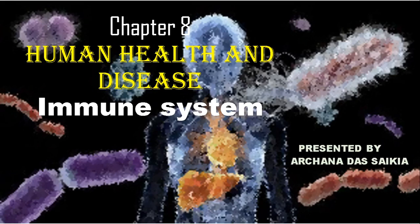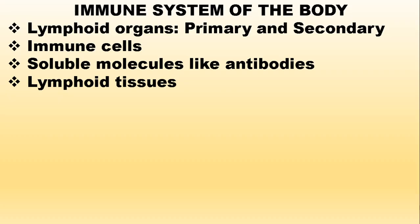In human health and diseases, we will talk about the immune system — the system which deals with providing immunity and protecting us against infections. The immune system of the body mainly involves lymphoid organs, which can be of two types: primary and secondary. Lymphoid organs are those organs which form and store the lymphocytes. The second component is immune cells — lymphocytes, macrophages, white blood cells, monocytes — and soluble molecules like antibodies, produced by the B lymphocytes, and also some additional tissues known as lymphoid tissue.